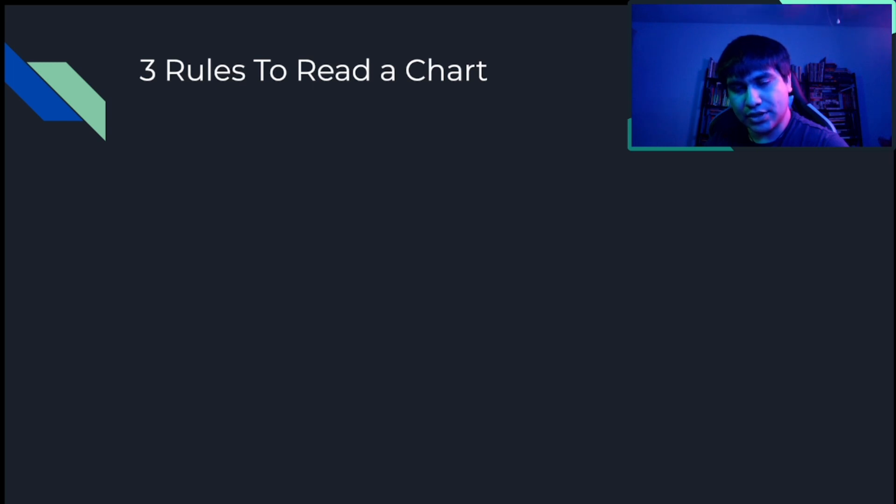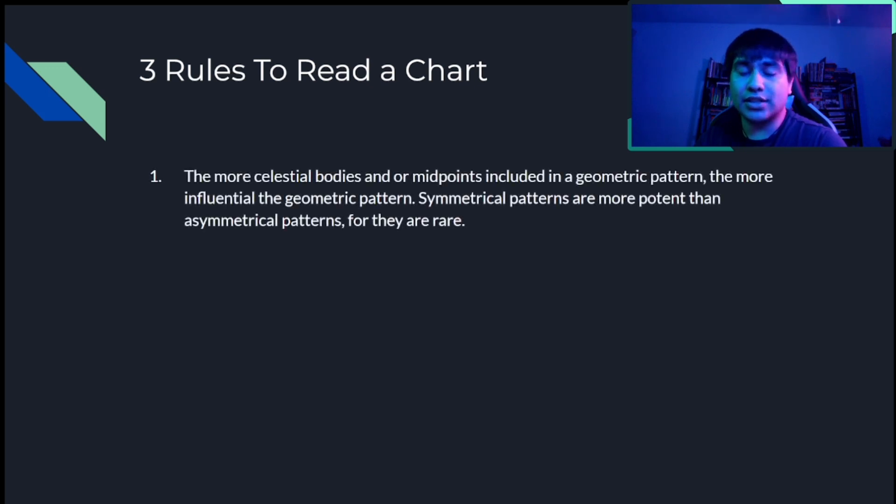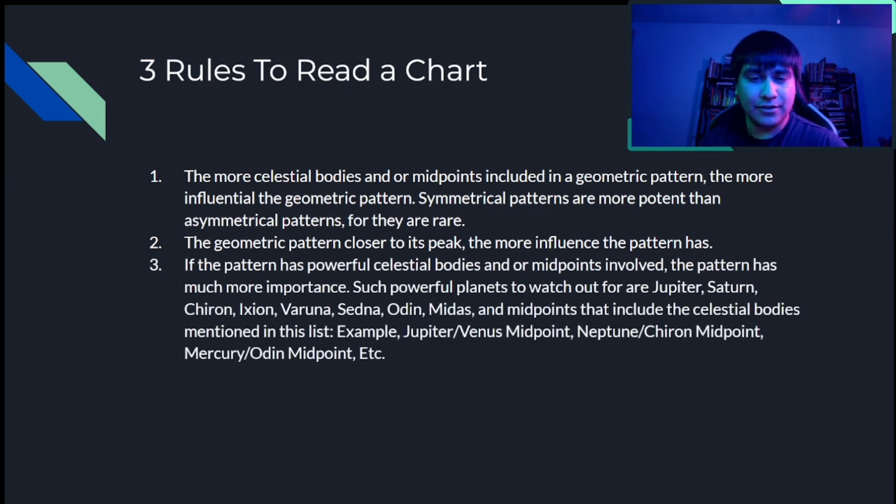In astrology, especially in Magi Astrology, there are three basic rules that will be consistently used when analyzing a chart or in this case reading a birth chart or any other kind of chart. The celestial bodies and or midpoints that are included in a geometric pattern, especially if there's multiple, are more significant patterns, especially if they are symmetrical patterns, mainly because they are rare compared to asymmetrical. If a geometric pattern is closer to a peak, the more influence it has.